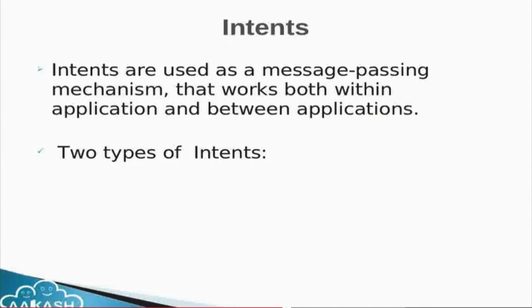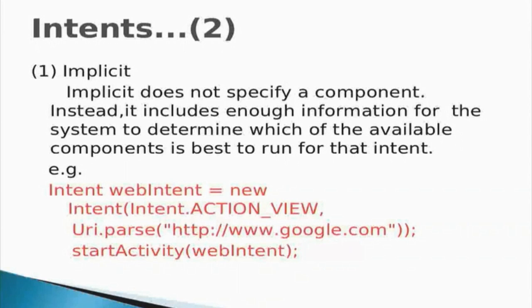Suppose the user wants to share a picture, they can do it using intents. What are intents? Intents are used as a message-passing mechanism that works both within an application and between applications. There are two types of intents: the first is implicit and the second is explicit. Implicit intent does not specify a component; instead it includes enough information for the system to determine which available component is best to run it.